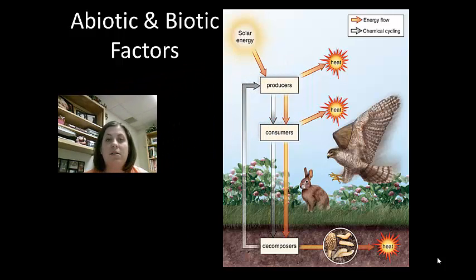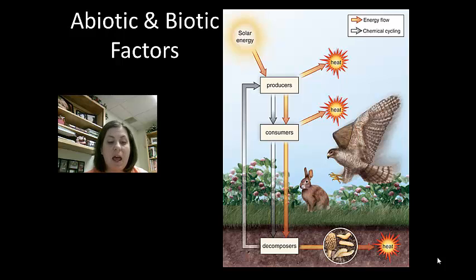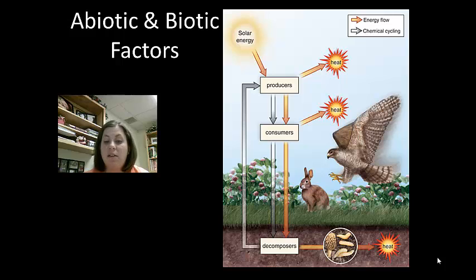Ecosystems include what we call biotic and abiotic components, and are characterized by energy flow and chemical cycles. Abiotic factors are the non-living factors, such as soil, water, sunlight, temperature, and wind. The biotic factors are the living components and can be divided into several groups. Producers are the autotrophs, which means they create their own food through the process of photosynthesis. Producers include plants, algae, and cyanobacteria.